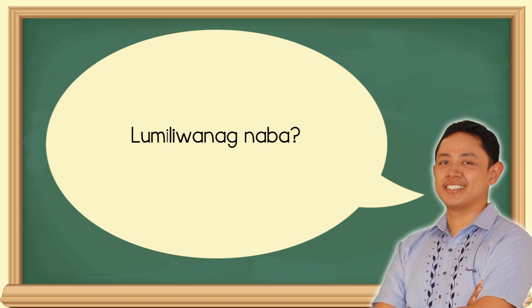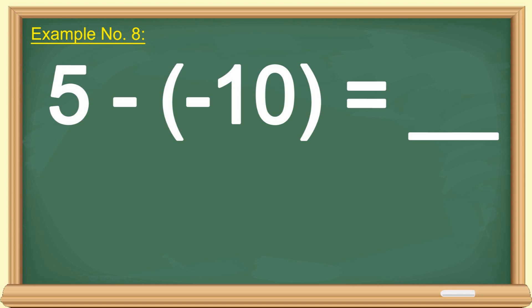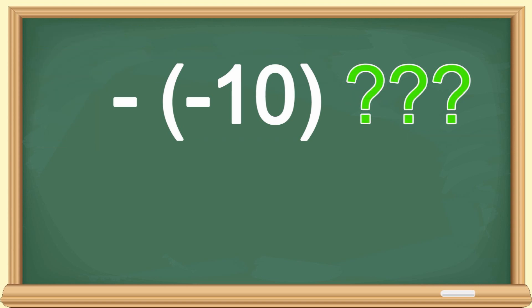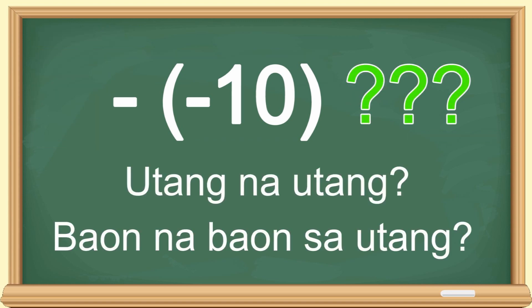Subukan pa natin ito. 5 minus negative 10 is equal to blank. Oops! Paano ito? Minus na negative pa. Simpli lang yan. Same process. Paghiwalayin ang numbers at ang minus ay laging sumasama sa next number. So, meron tayong 5 at minus negative 10. Ano yun? Utang na utang? Baon na baon sa utang? Hindi ganun yun.